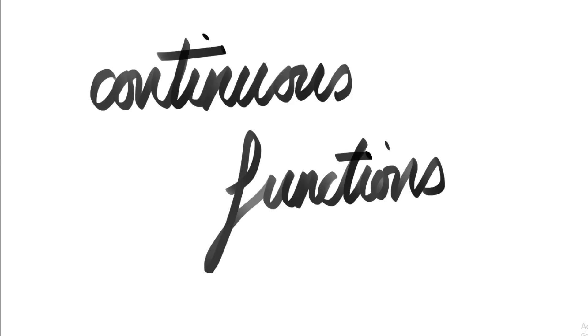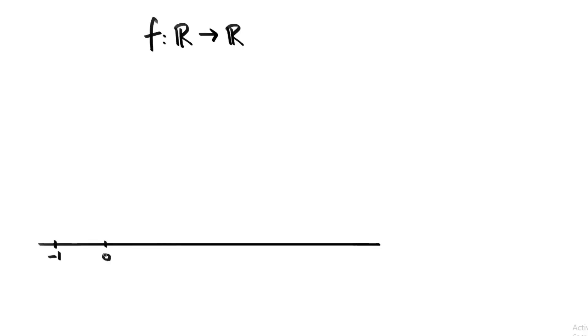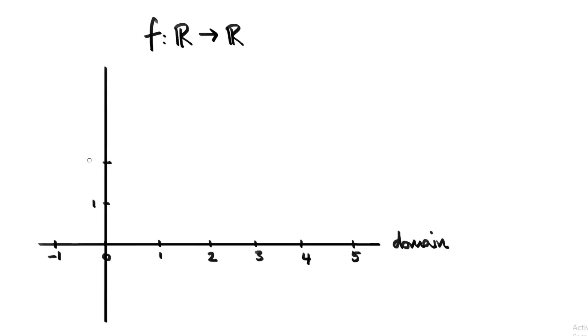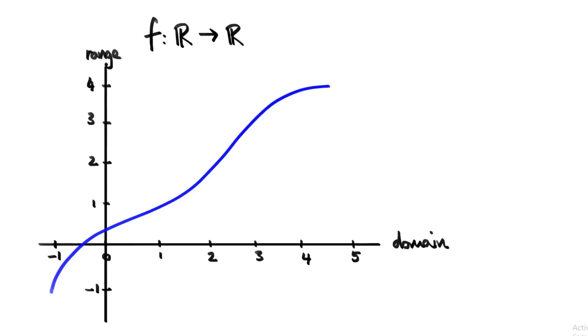So let's talk about continuity, but first we're going to need a function. We're going to use a type of function that by now is becoming pretty familiar — a function that goes from the real numbers into the real numbers. Its inputs are real numbers and its outputs are real numbers. In one of my previous videos, we saw a brilliant way of representing this graphically: draw the real number line horizontally to represent the domain, which is the set of inputs, and draw a real number line vertically to represent the range, which is the set of outputs. As the input moves along the domain, the output moves along the range, creating a line that traverses the space between the two axes.